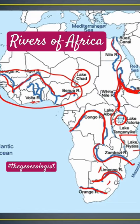So these are the major rivers. If you observe, here is the Atlantic Ocean, and then the Indian Ocean, Gulf of Aden, Arabian Sea, and Red Sea.